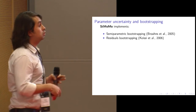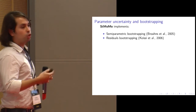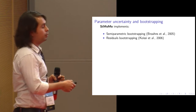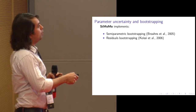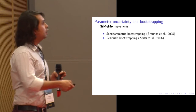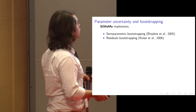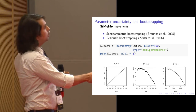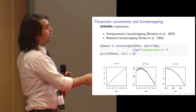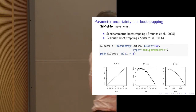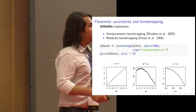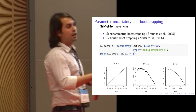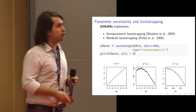Finally, you may want to implement bootstrapping to account for parameter uncertainty. StMoMo offers two bootstrapping techniques: the semi-parametric bootstrapping developed by Brouhns and co-authors, and the residual bootstrapping implemented by Cairns and co-authors. You call the bootstrap function specifying the fitted model, the number of bootstrap samples, and which method to use. For large populations like the UK (around 60 million), parameter uncertainty is small, but for smaller populations like New Zealand it becomes more important in forecasting.